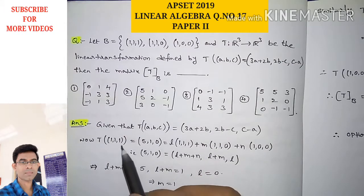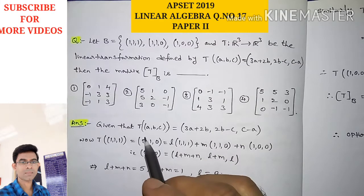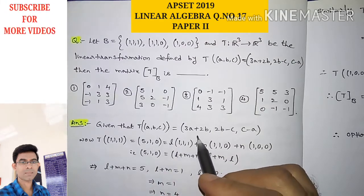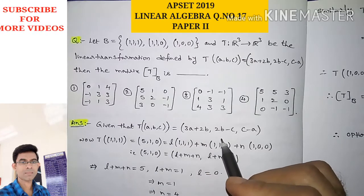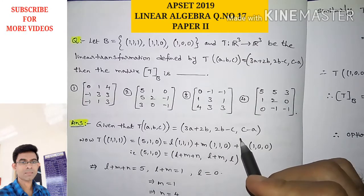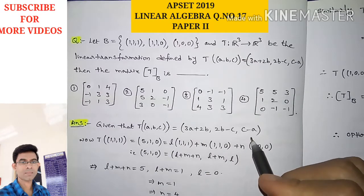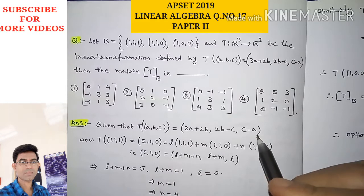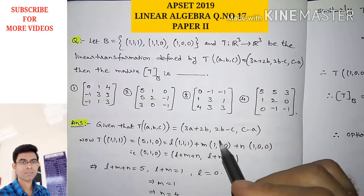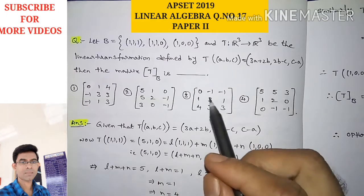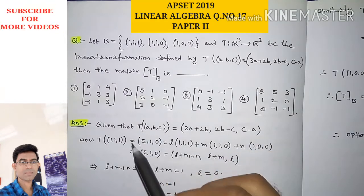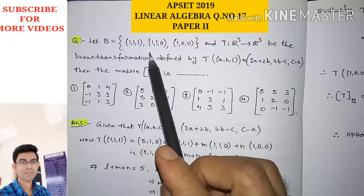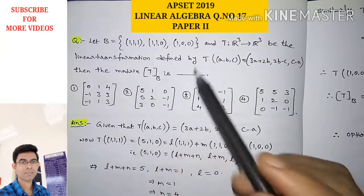Now coming to the problem: given T(A,B,C) = (3A+2B, 2B−C, C−A). This is the given linear transformation, and we have to find the matrix representation of this linear transformation with respect to the given basis B.